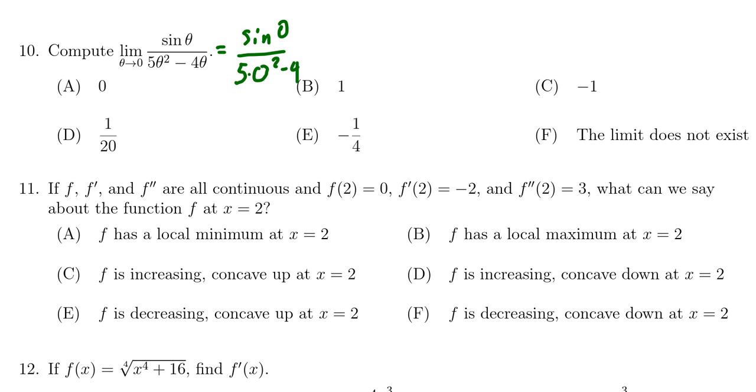5 times 0 squared minus 4 times 0 on the bottom. That's going to give us 0 in the denominator, so we are outside the domain of this function. But since sine of 0 is likewise 0, we get 0 over 0. This is an indeterminate form.